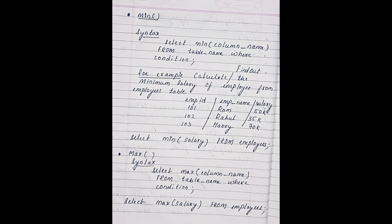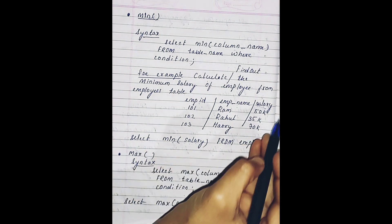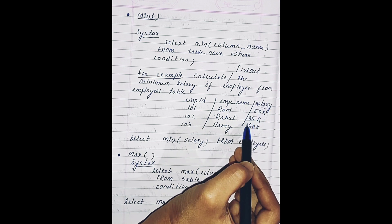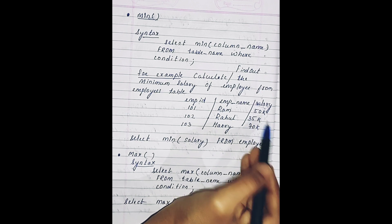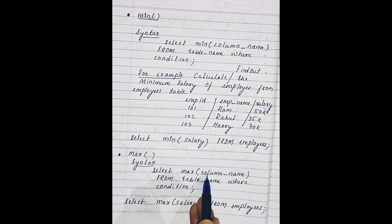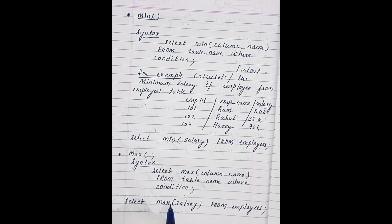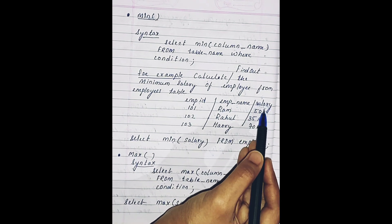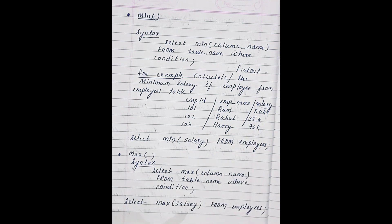Now moving ahead to the maximum function. The maximum function is just the opposite of the minimum function — it finds the largest record among all the records of the selected column. For example, if the selected column is salary, it will search for the largest record. The syntax is: SELECT MAX(column_name) FROM table_name WHERE condition, and the query would be: SELECT MAX(salary) FROM employees.